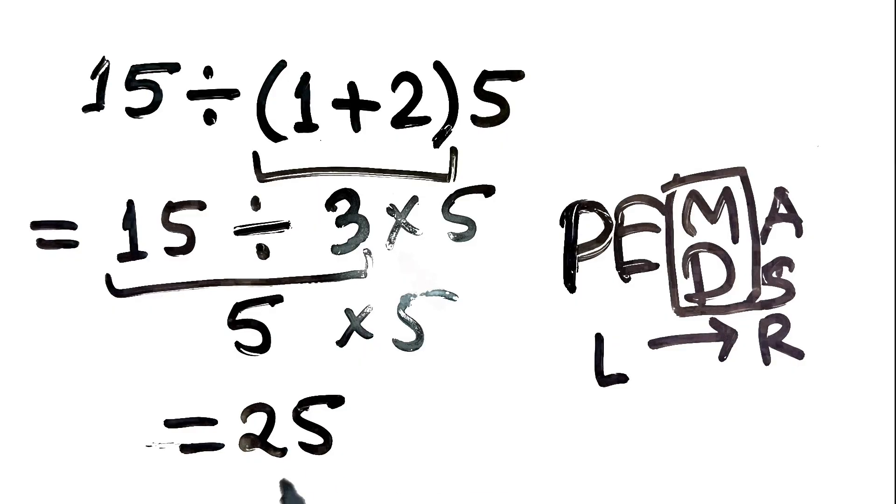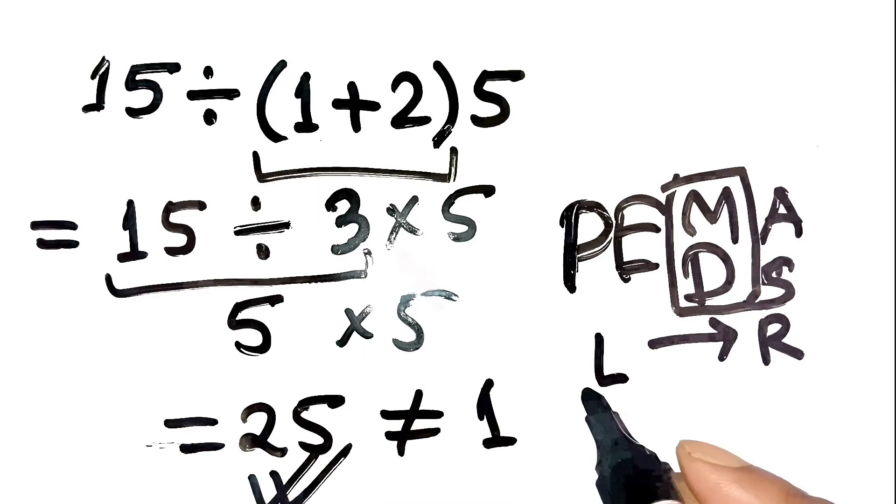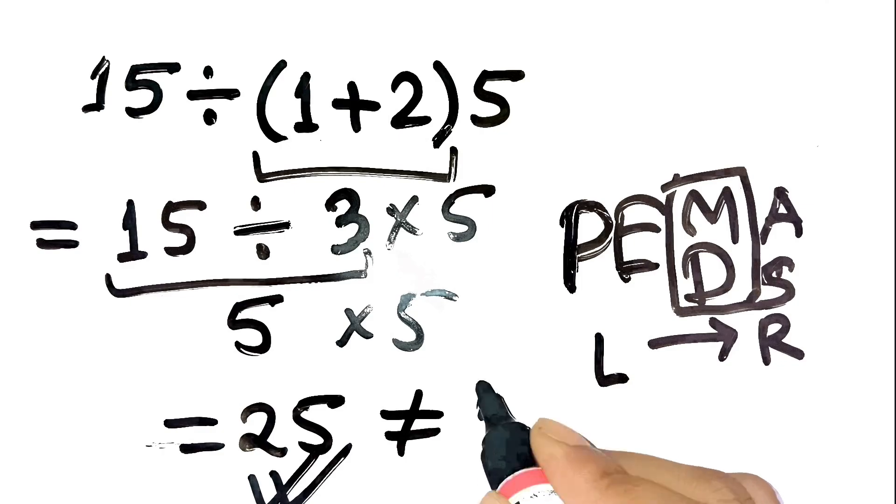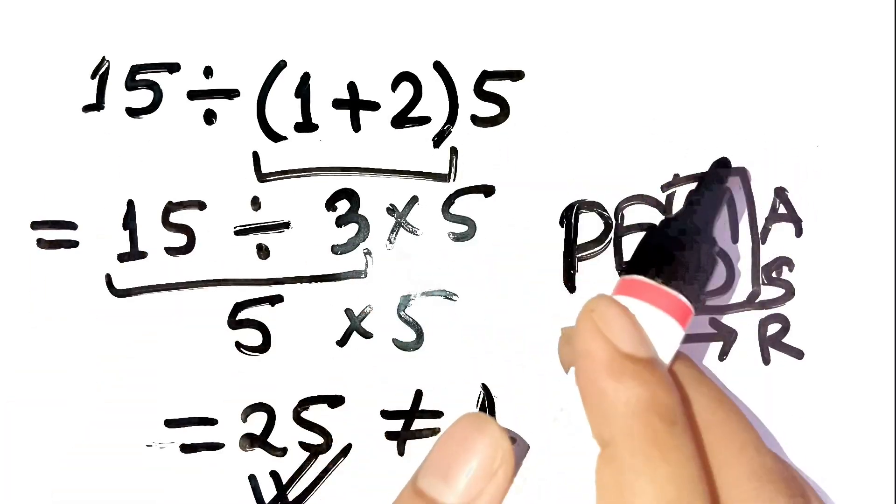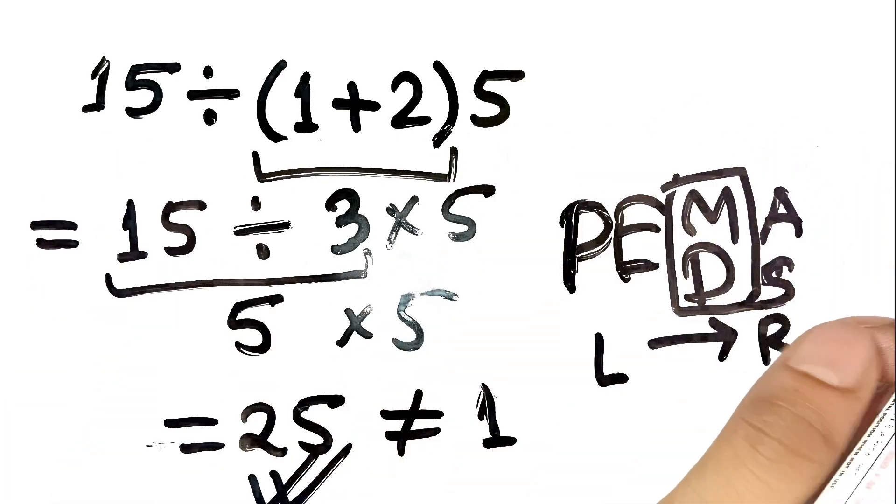So the correct answer is 25, not 1. See how that left to right rule for division and multiplication completely changes the result?